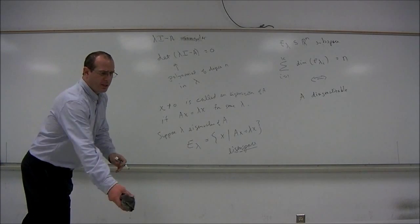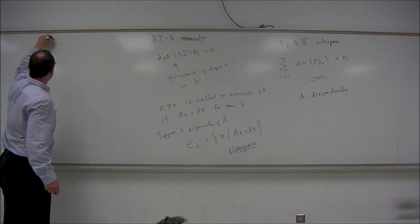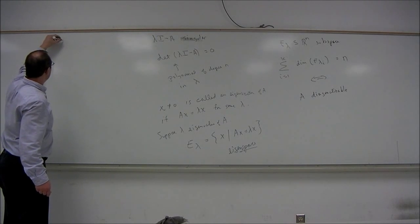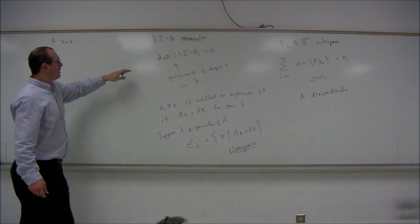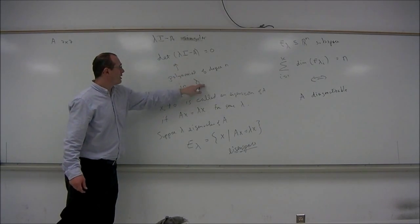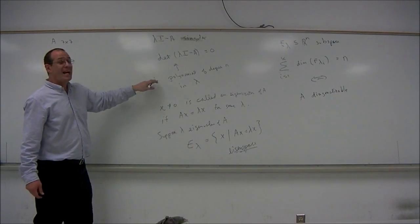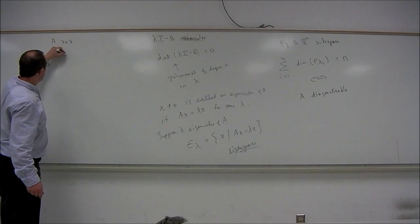So let's just look at a pseudo-example. Suppose we have a matrix A, which is 7 by 7, and let's suppose that the determinant of lambda I minus A, this is a polynomial that would be of degree 7, called the characteristic polynomial.